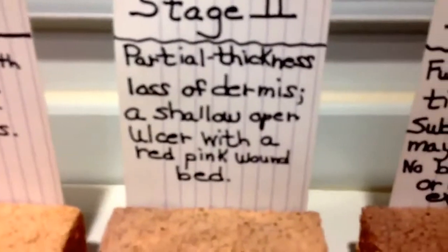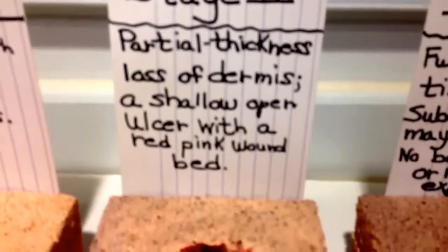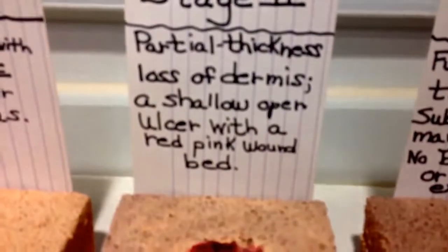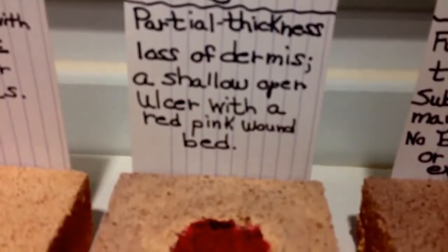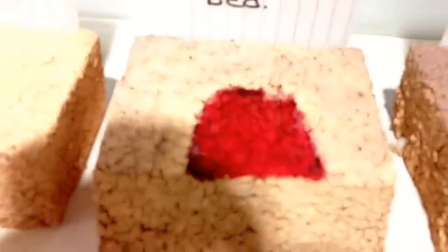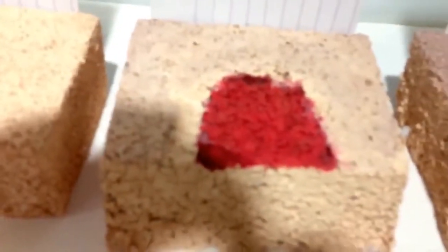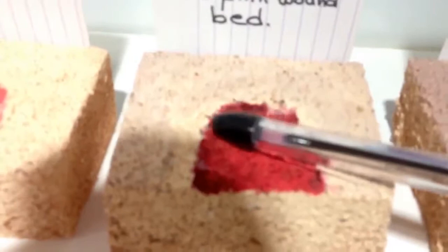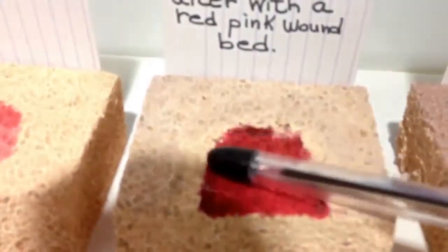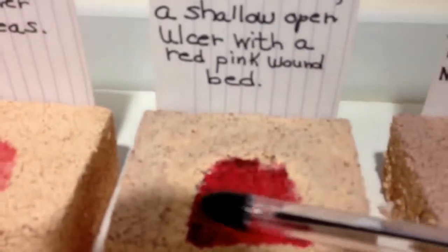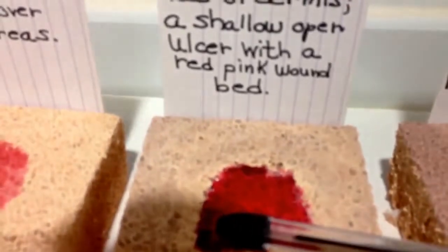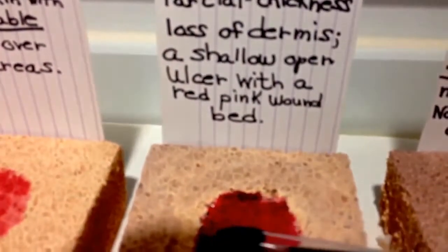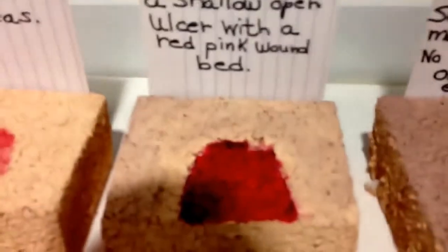Now let's go to stage two. Stage two is known as partial thickness loss of the dermis, or a shallow open ulcer with a red-pink wound. As you can see in the stage two wound, there's a partial thickness of the wound exposed, and you can see it's like an open ulcer. The dermis is already being lost in stage two — that is the key characteristic.